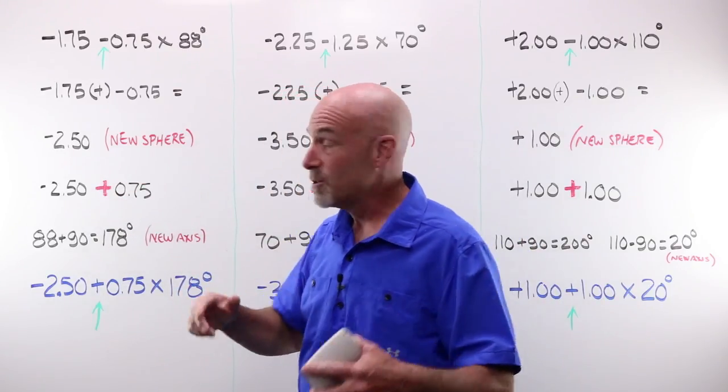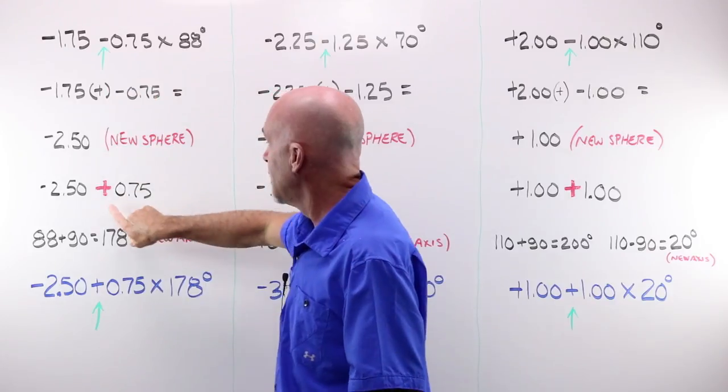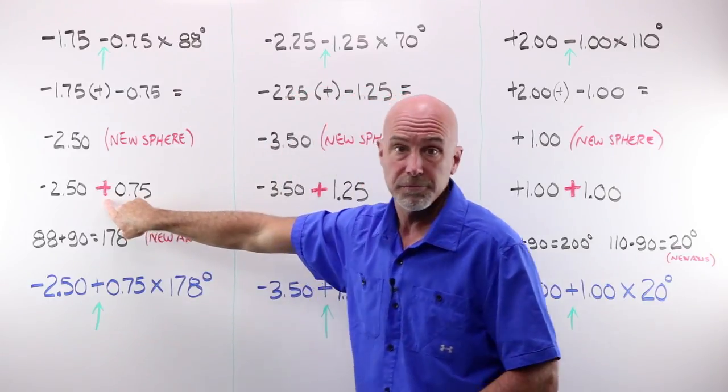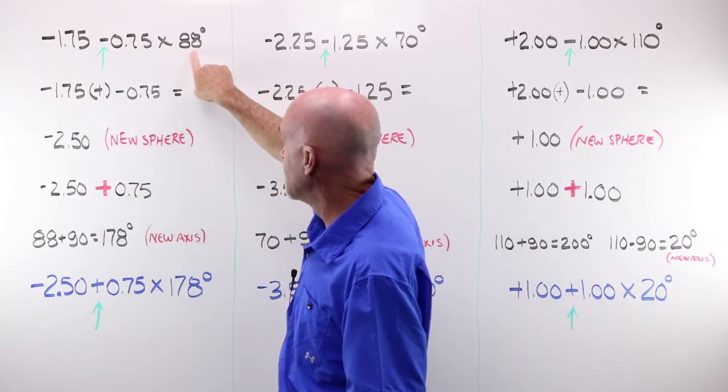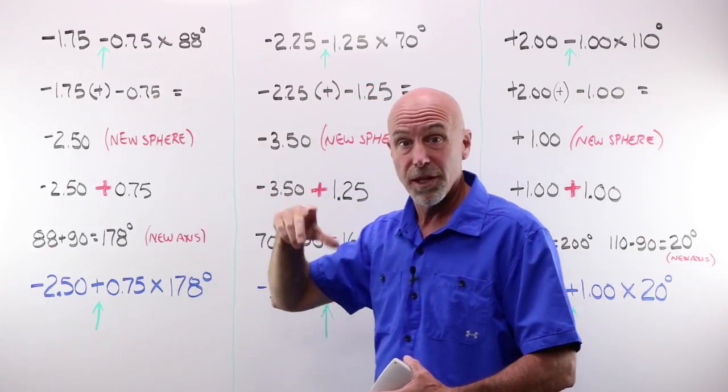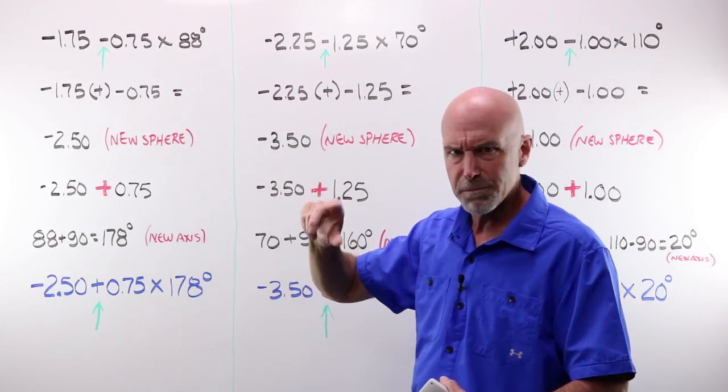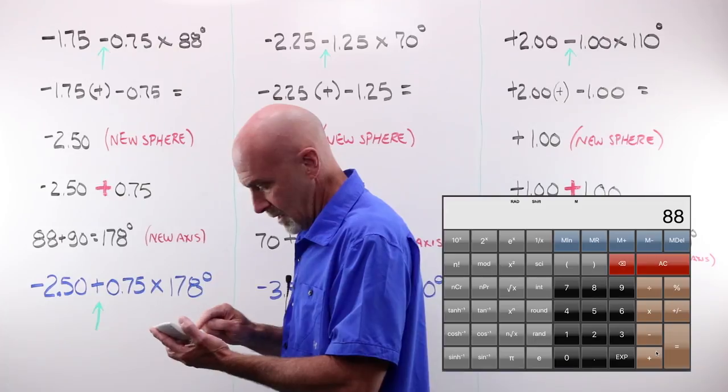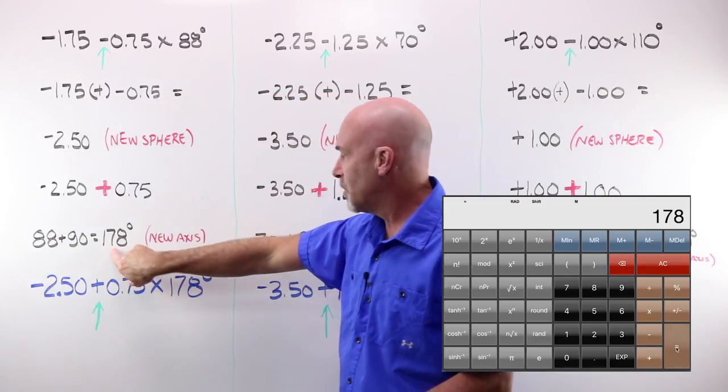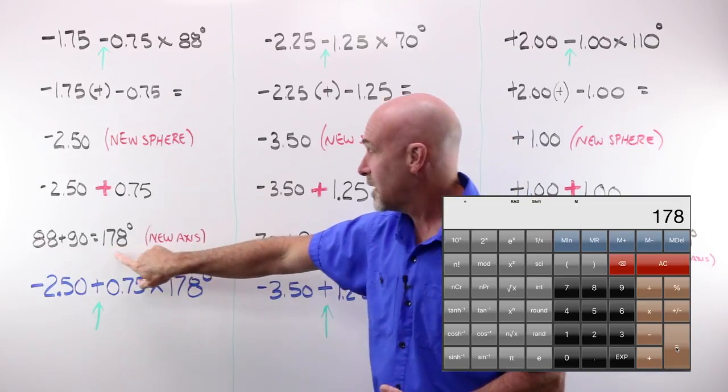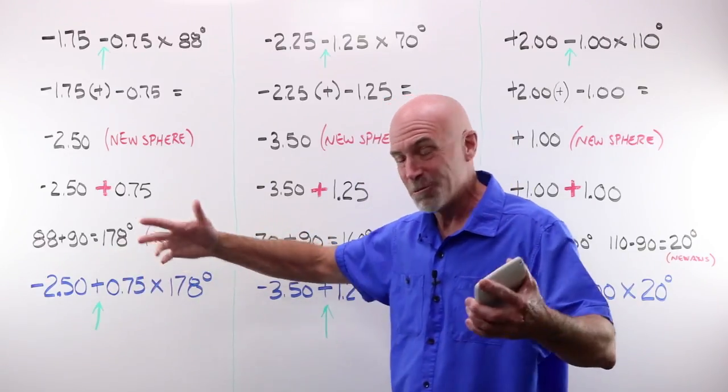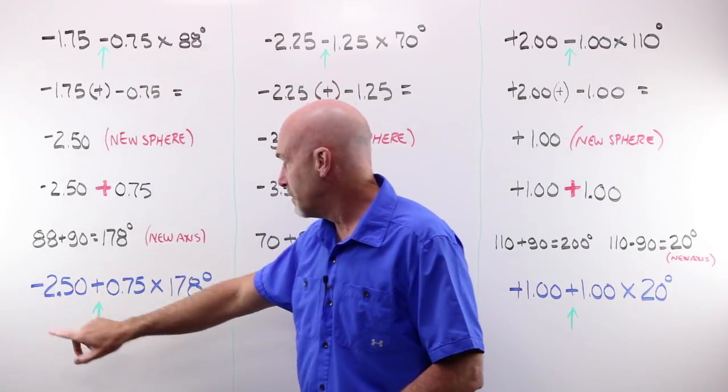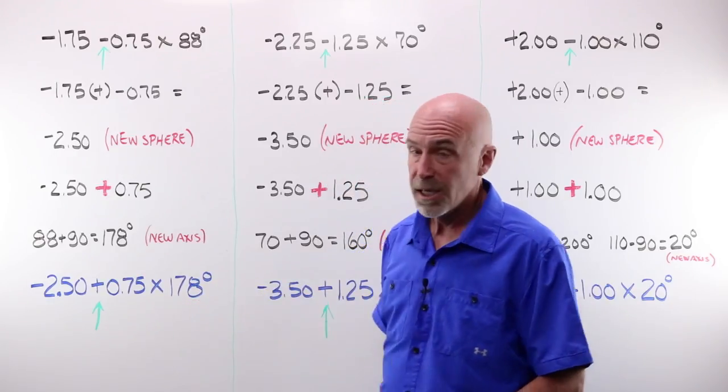Now, the next step, according to the rule, is to take your cylinder amount, leave the value exactly the same, and change the sign from minus to plus. Now we need to change our axis by 90 degrees, that distance that travels the lens from the highest point to the lowest point, most power to least power within the lens that I just showed you. And in this case, I can take my 88 and I can add 90 and I end up at 178 for a new axis. 178 does fall between zero and 180 degrees, so we're good to go. My minus cylinder form written as plus cylinder form is a minus 2.50 plus 0.75 at 178.